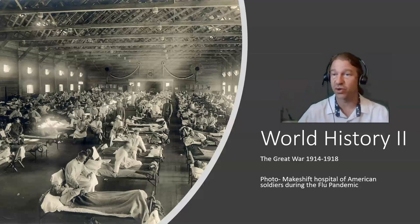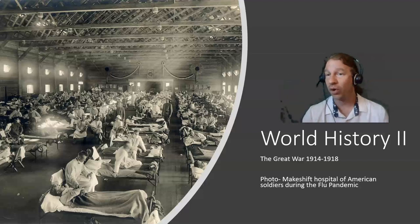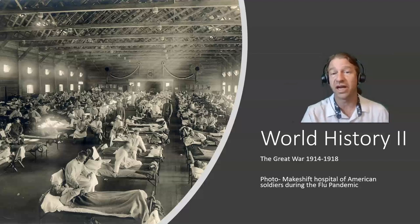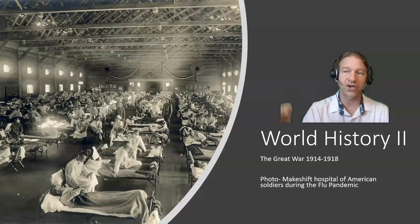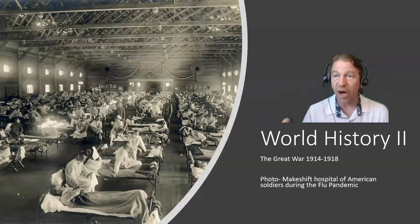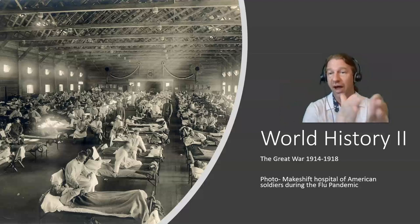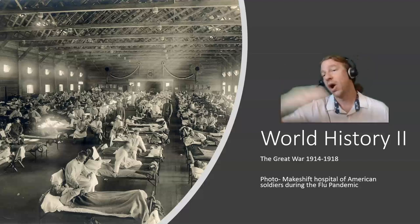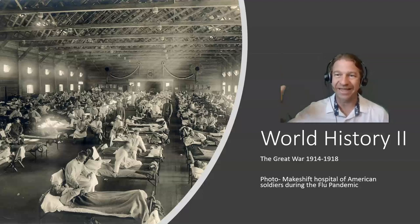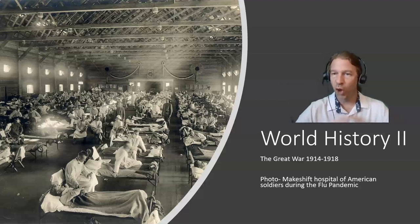Select one element that we have discussed or will discuss in class. The Columbian Exchange is a perfect example of how global interconnections prompt historical change. The Black Death is an example of how global interconnections spur world historical change. The photo you see here is actually a photo of a makeshift hospital of American soldiers during the flu pandemic at the end of World War I. This pandemic was brought about because of global interconnections during the First World War.